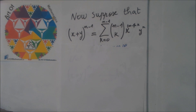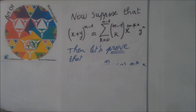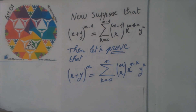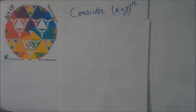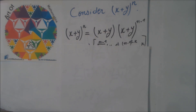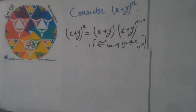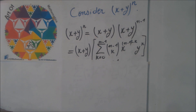Now we suppose that we have the expression for the term n minus one — that is our inductive hypothesis. Then let's prove that this is true for the nth term. Consider (x+y)^n, which equals (x+y) multiplied by (x+y)^(n-1).